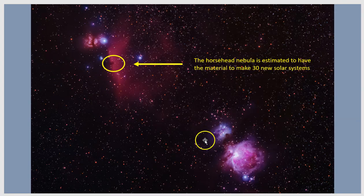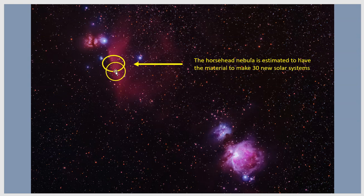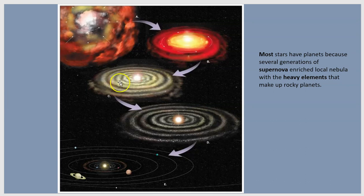Here we see the Orion Nebula, and that little thing there is the Horsehead Nebula using a wide-angle lens. But that horsehead is thought to have about the material to make 30 new solar systems. We have found that most stars have planets because galaxies are old. The universe is pretty old. The universe has already gone through several generations of previous stars that have exploded to enrich nebulae with heavy elements. So most stars in our galaxy are thought to have planets.